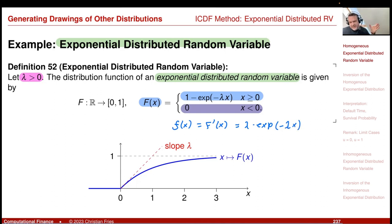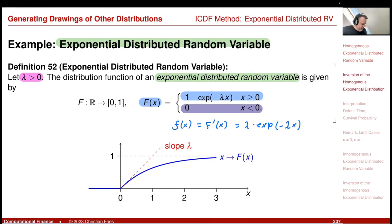Plugging in zero, you see that at zero the slope is lambda, and then it approaches 1.